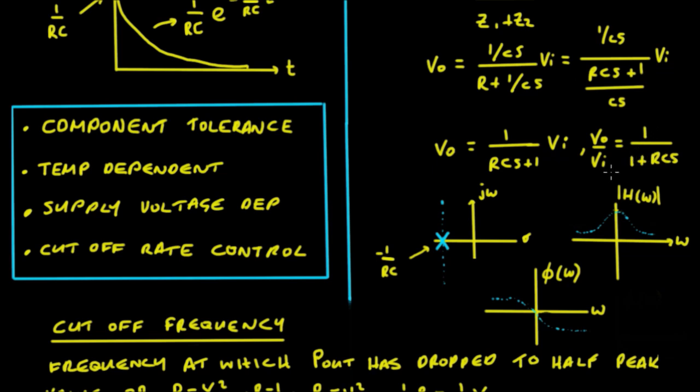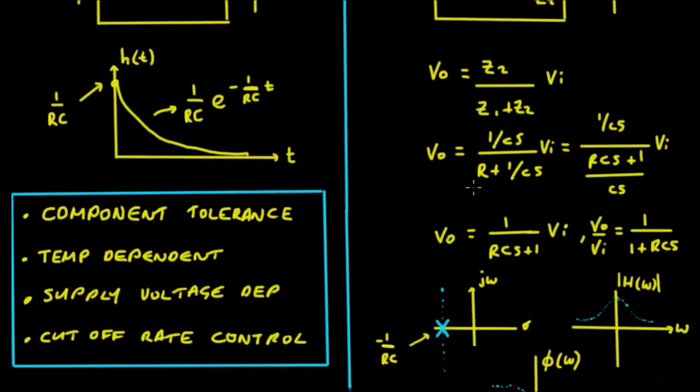So we can see here that we're going to have a pole whenever S equals minus 1 upon RC. If I draw out the sigma j omega axis, the complex frequency plane, we're going to have a pole at minus 1 upon RC. And that's going to give us a low pass filter with the phase as shown here.